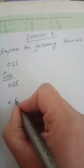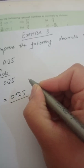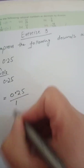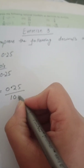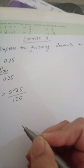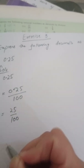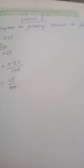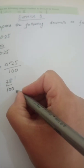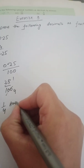For 0.25, to remove the decimal point and convert to a fraction, we place 1 under the point and add as many zeros as there are digits after the decimal. There are two digits, so two zeros: this gives us 25 upon 100. Now we simplify: 25 times 1 is 25, and 4 times 25 is 100, so the final answer is 1 upon 4.